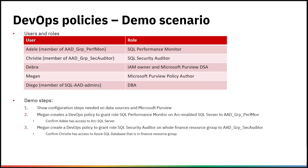As far as the steps, we'll first show what the prerequisites are that are needed before policies get created, both on data sources and Microsoft Purview. Then Megan, as the policy author, will create a policy to assign role SQL Performance Monitor to AD Group Performance Monitor, and this will happen in the scope of an Arc-enabled SQL Server. Then Adele, which is part of that group, will prove that she has access to that Arc-enabled SQL Server.